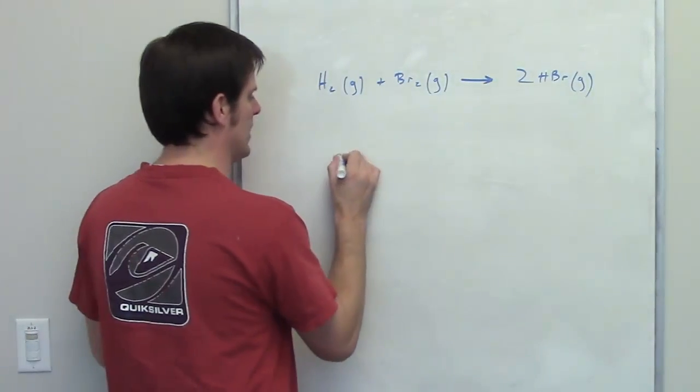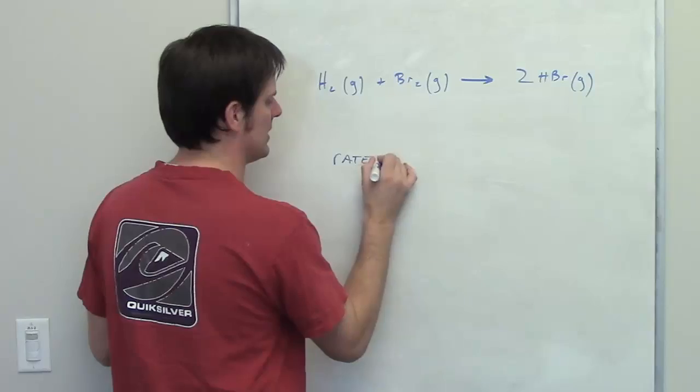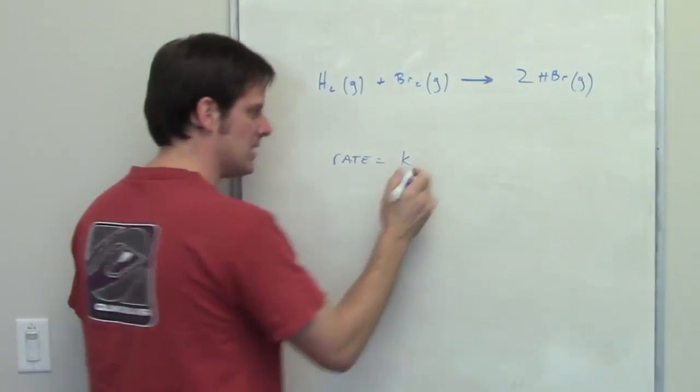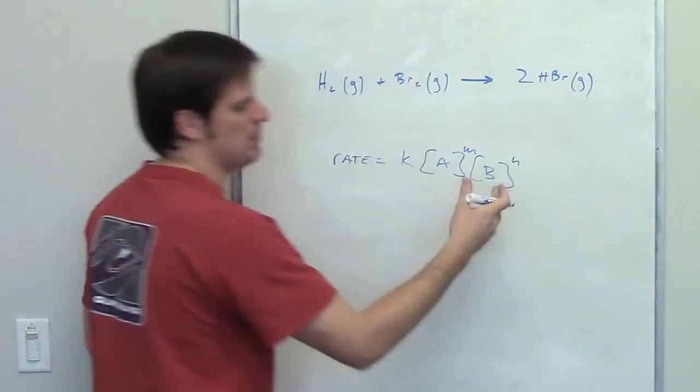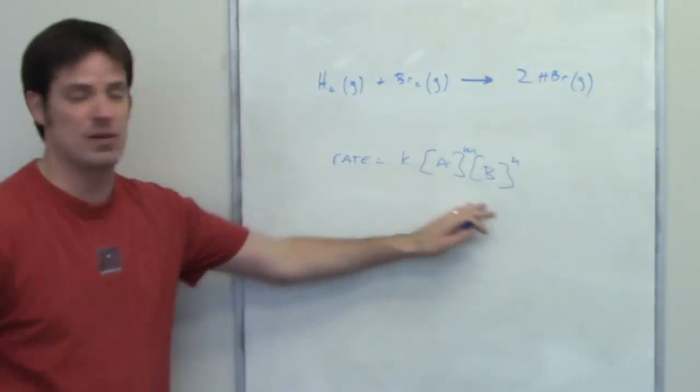I told you in earlier videos that a rate law for any process is equal to some rate constant multiplied by the concentrations of its various reactants raised to some exponents m, n, o, p, for however many reactants there are.